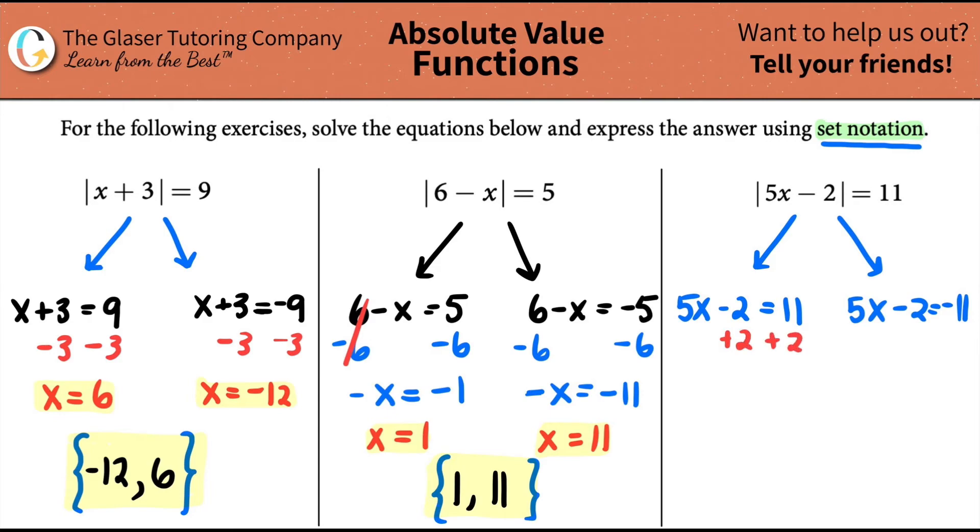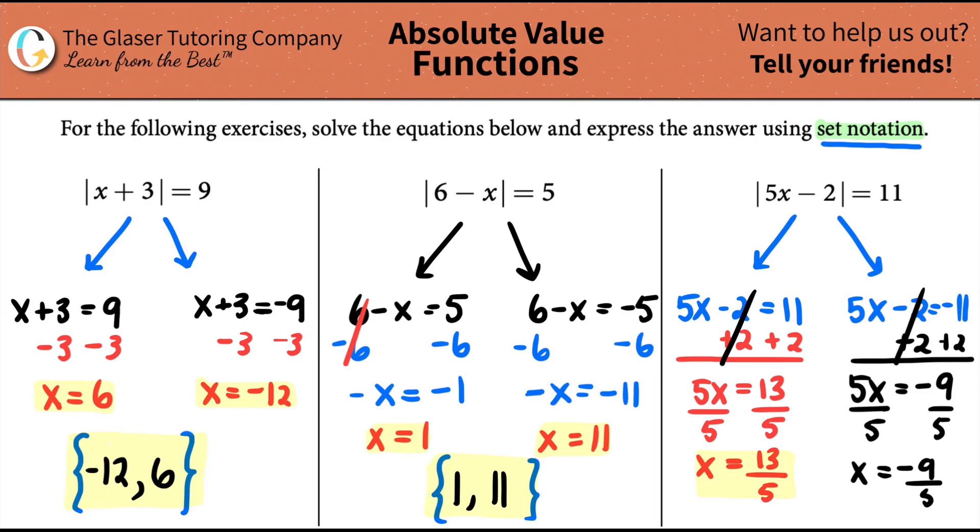So we want to get x by itself. I will plus 2 first, plus 2. We get 5x equals 13. And then I divide by 5. So I have x equals 13 over 5 for this one. I can't simplify that. And then if we do the same thing for the other one, plus 2 plus 2. I have 5x equals negative 11 plus 2 is a negative 9. And then divide by 5, divide by 5. x equals negative 9 over 5. So I got my two answers. And I can't simplify that as well.